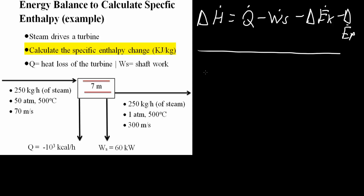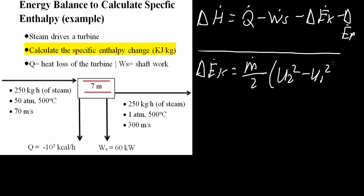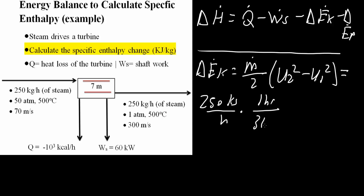We will calculate the kinetic energy. Delta EK is equal to the mass flow rate divided by 2, times velocity squared minus velocity squared — the change in velocity. First, we want to convert our 250 kilograms per hour into kilograms per second. We say 250 kilograms per hour, and we know that one hour is 3,600 seconds, so we get 0.0694 kilograms per second.